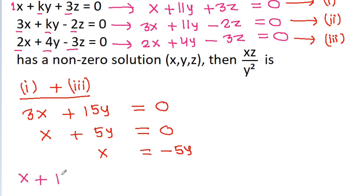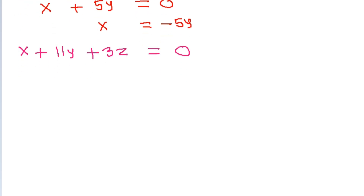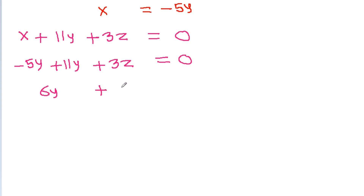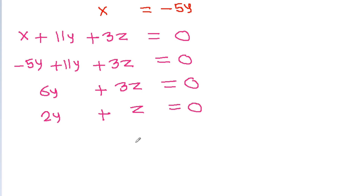From equation 1: x plus 11y plus 3z equals 0. Substituting x equals minus 5y: minus 5y plus 11y plus 3z equals 0, giving 6y plus 3z equals 0. Dividing by 3: 2y plus z equals 0, so z equals minus 2y.